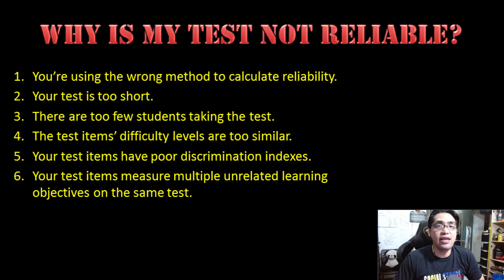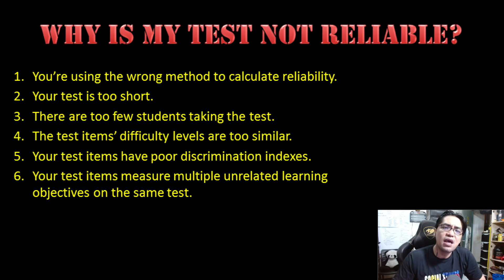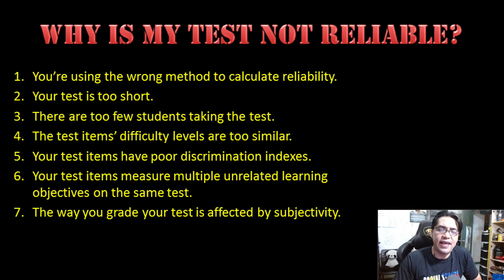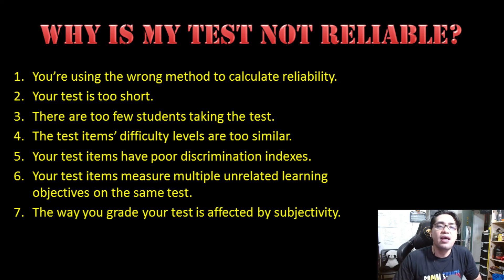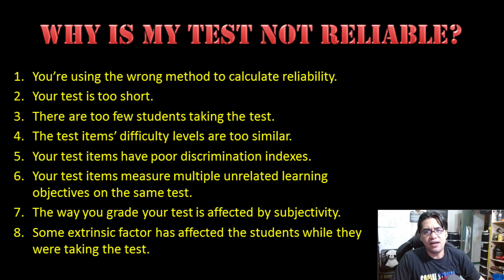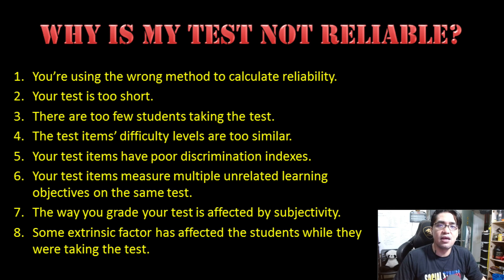It's always good to vary the difficulty and complexity of test items, such as by using Bloom's Taxonomy. Poor item discrimination also lowers reliability. If your test has items measuring very different or unrelated learning objectives, reliability tends to be lower — that's why you shouldn't measure students' learning in different unrelated subjects in one test. The subjectivity of grading also plays a part; when grading of essays or short-answer items depends on the teacher's opinion or mood, reliability drops. Try creating objective grading standards. Extrinsic factors like noise and poor ventilation can also distract students and lower reliability.